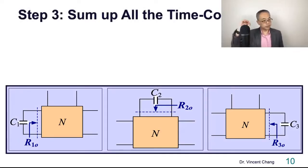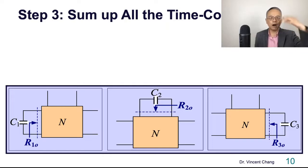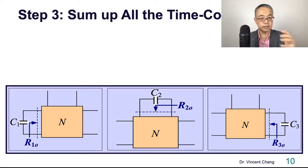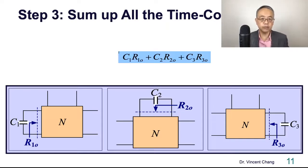So now you move on to step number three. You just simply sum up all the time constants. Sum up all the time constants. What does that mean? The first time constant C1 R1O, C1 times R1O. The second C2 times R2O. The last one C3 times R3O. Easy, right?